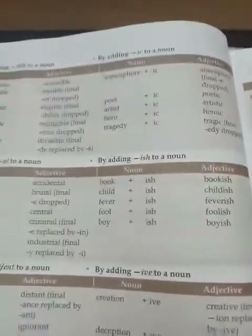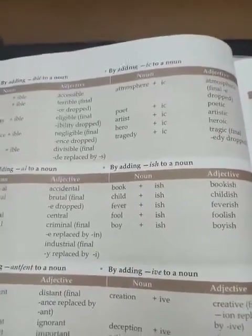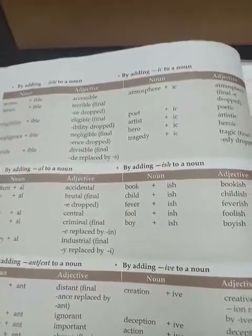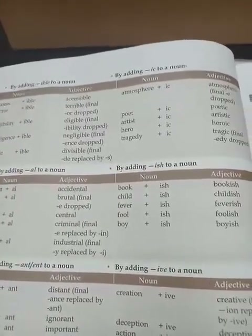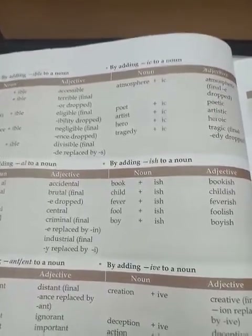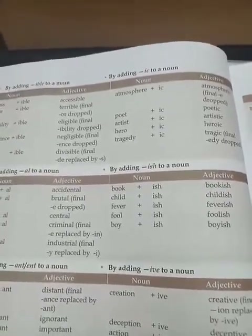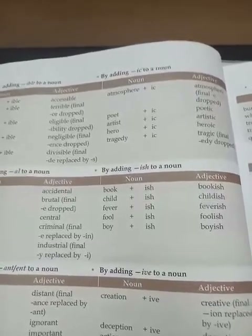By adding ISH: BOOK is a noun, and if we add ISH it becomes BOOKISH. CHILD plus ISH becomes CHILDISH.